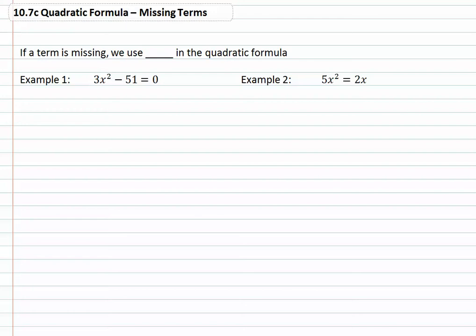10.7c quadratic formula, missing terms. If we have a term that's missing, we will use zero in place of that term in the quadratic formula.